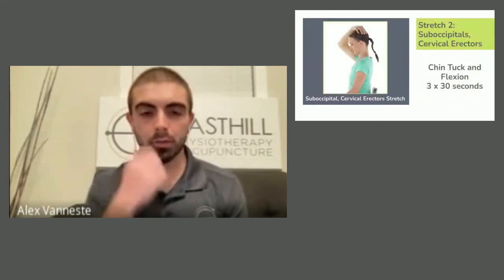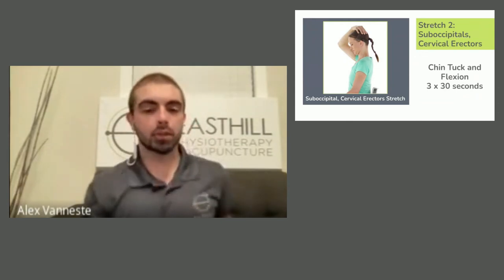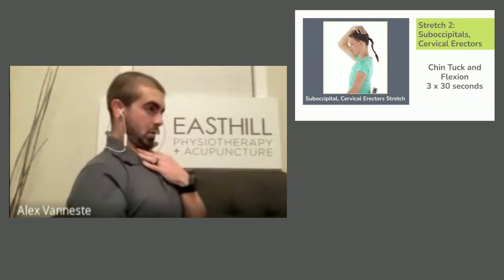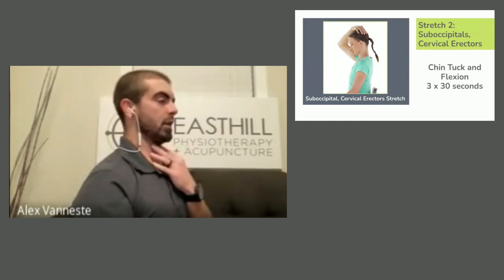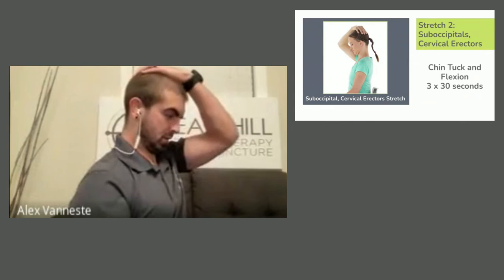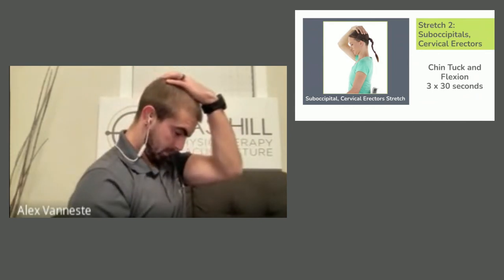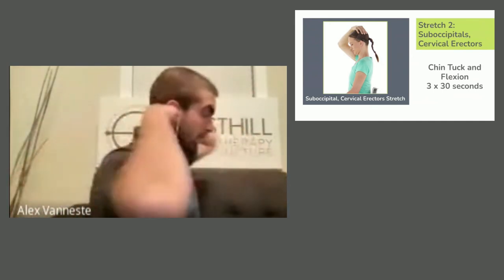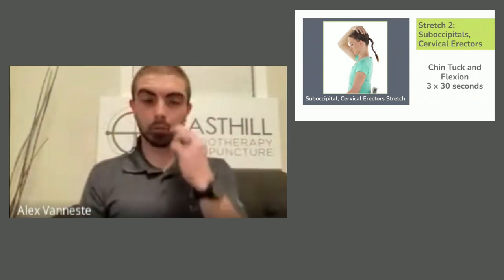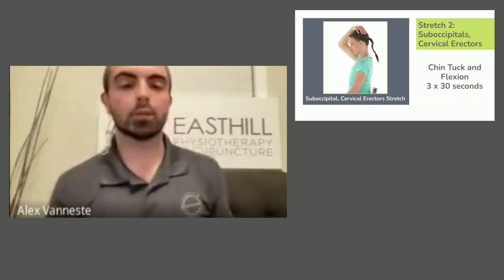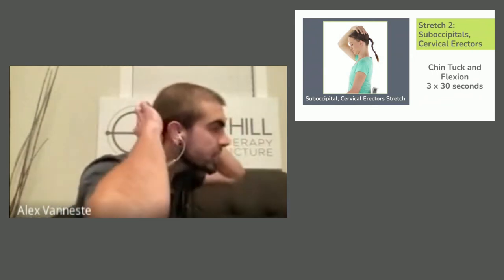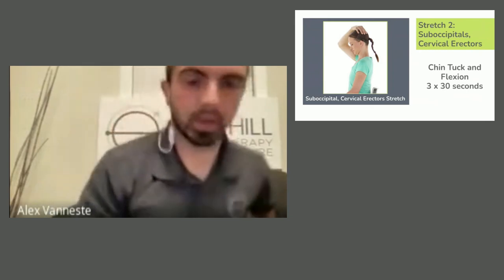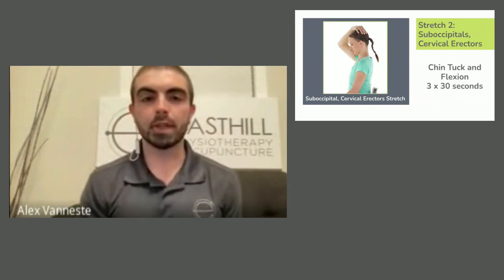Number two: stretching the suboccipitals and cervical erectors — chin tuck and flexion. Turn sideways: give yourself a double chin, really pull that in — that is a chin tuck. Then pull your chin towards your chest and hold. You should feel this stretch on the back of the neck. For some people, even just starting with the chin tuck will already feel like a big stretch, because if we think about all our time spent at our desk, we all live with our head forward and these muscles are really short. When you straighten up and pull that chin in, that gets even longer. Three times 30 seconds, gentle stretching.